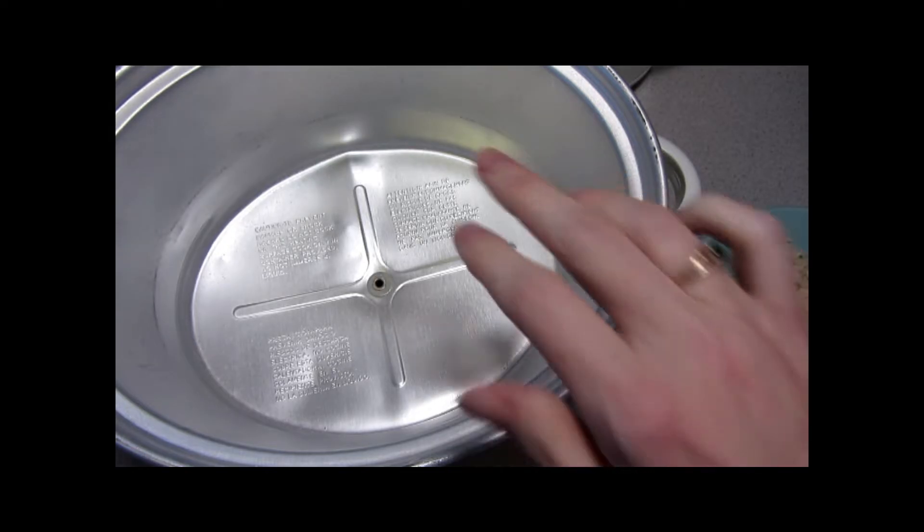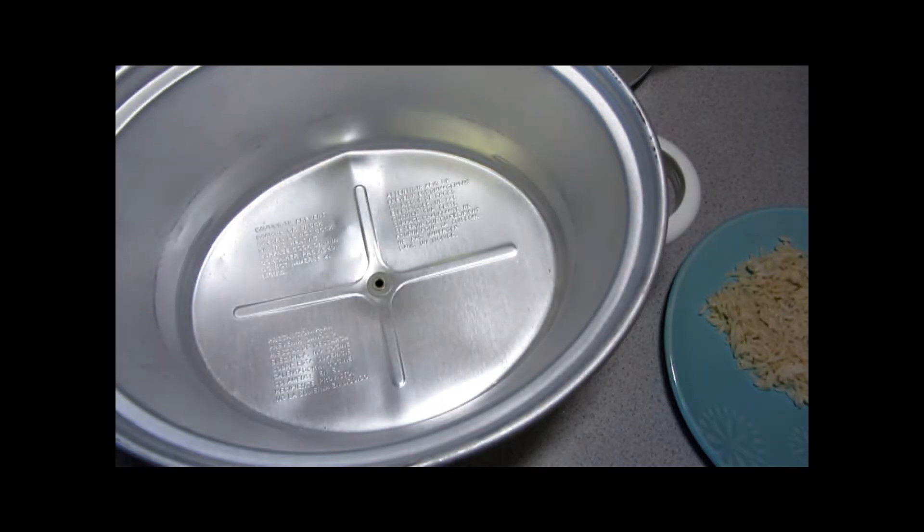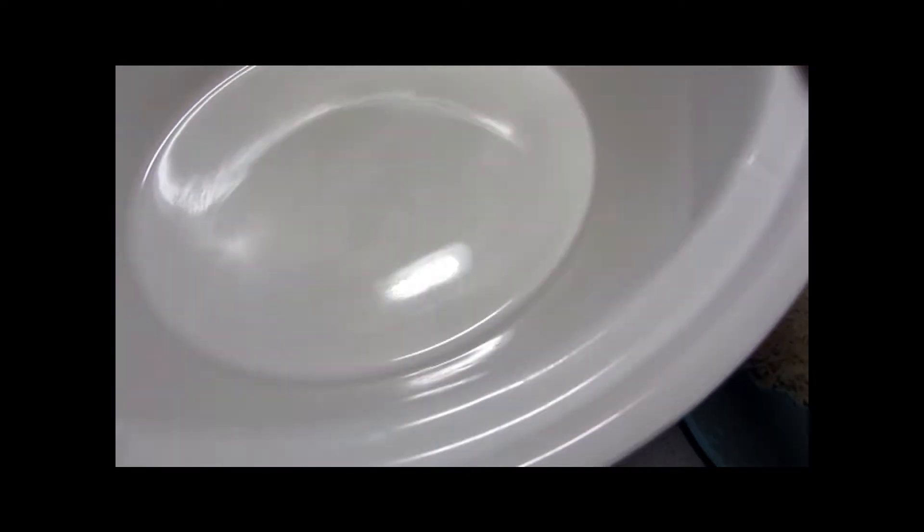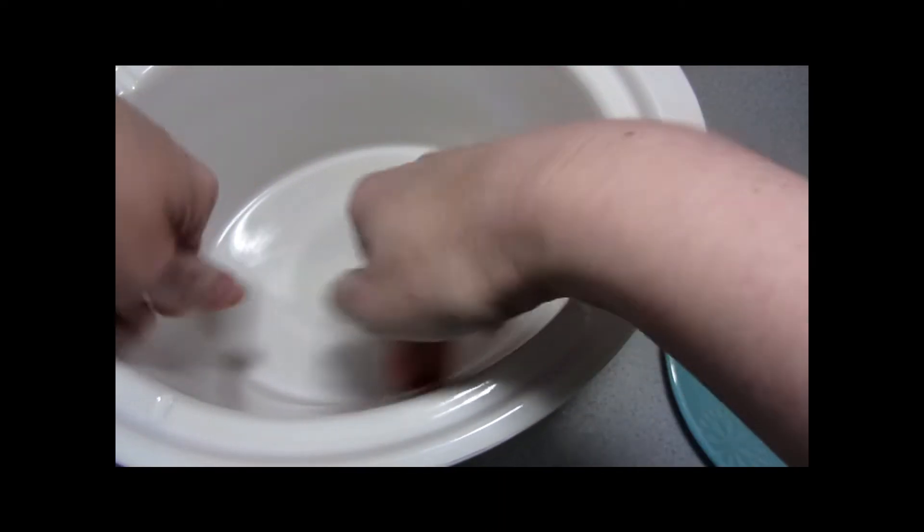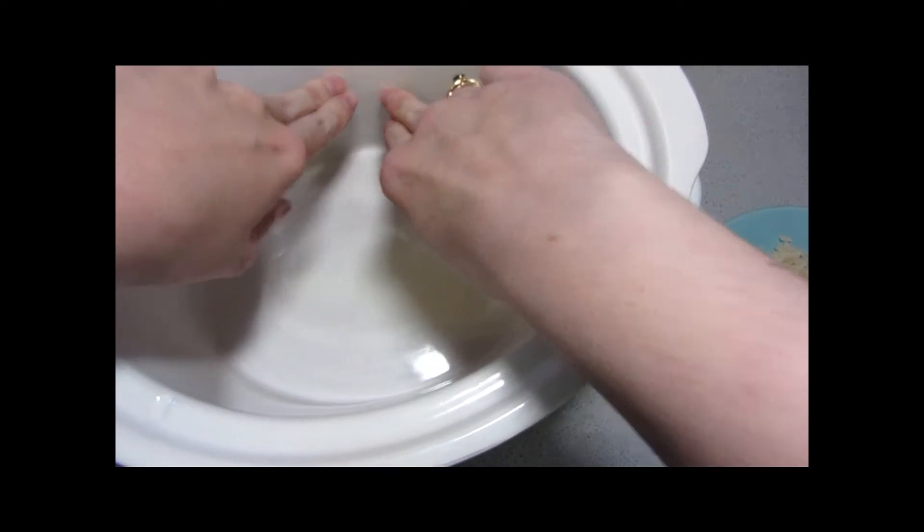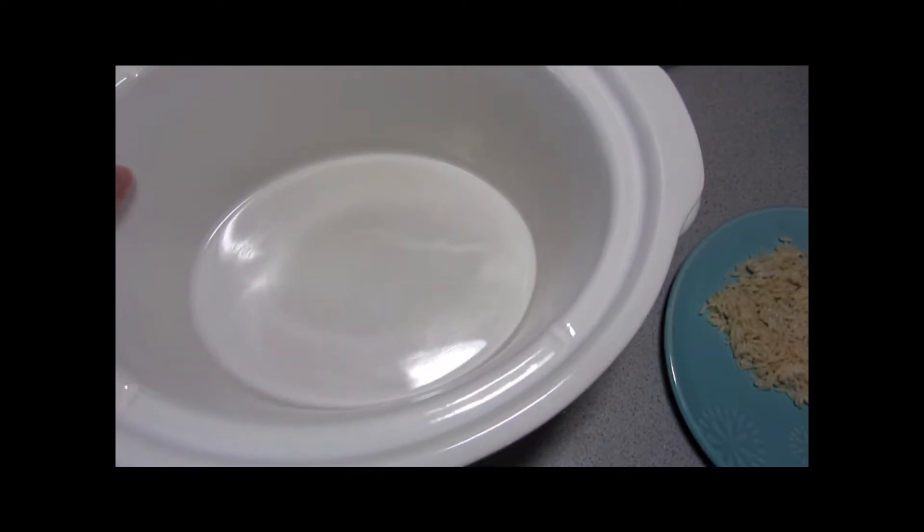In many slow cookers there is no heating element in the bottom. All the heating comes around the side, and so it's important to fill the slow cooker properly. You want it to be at least half full because that's where the ingredients are going to be heated. You don't want to fill it more than about two-thirds full, however.